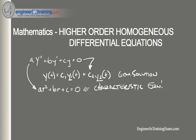Once the equation is in this form, we can solve to obtain the two roots r1 and r2. We find r1 and r2 either by factoring or using the quadratic equation. The values of r will then determine the form of y1(t) and y2(t).